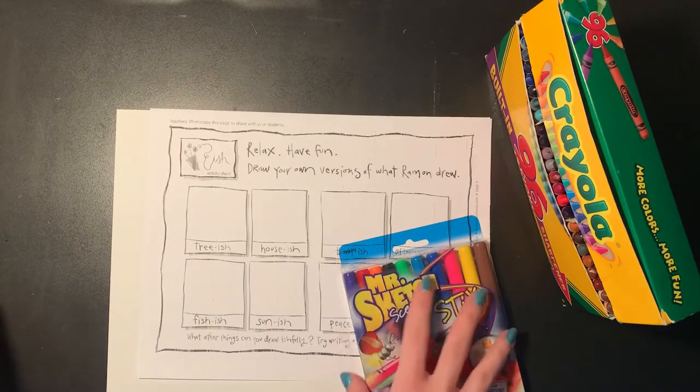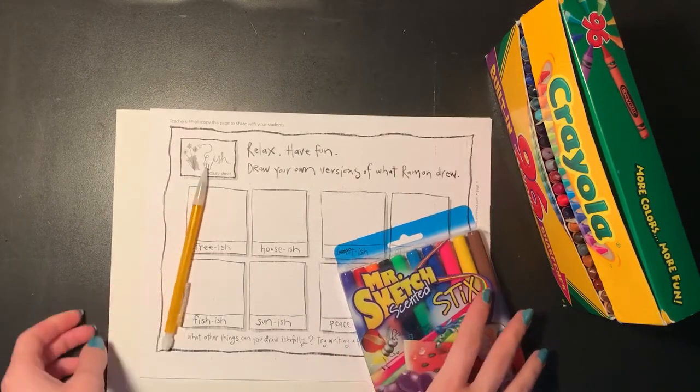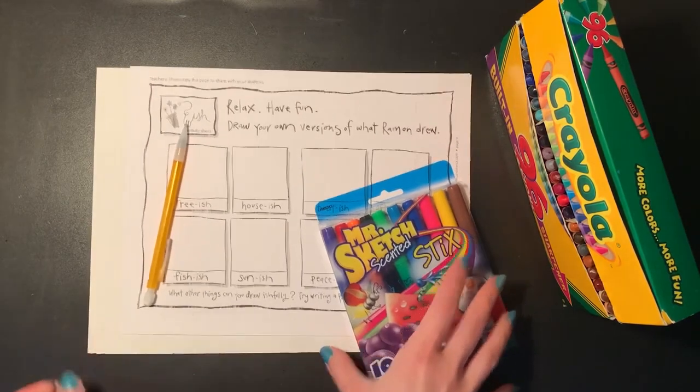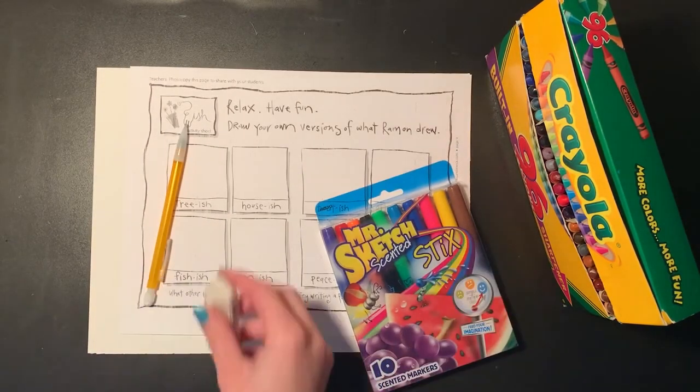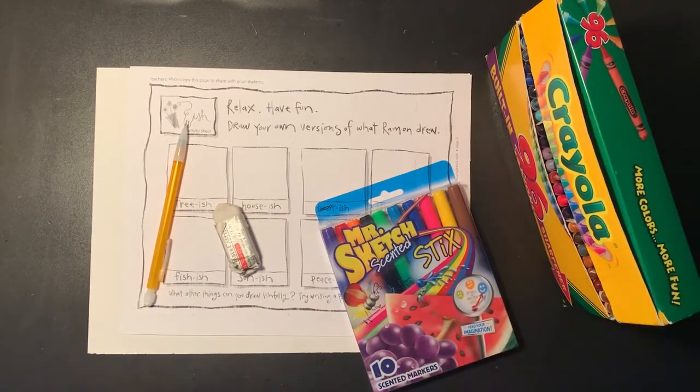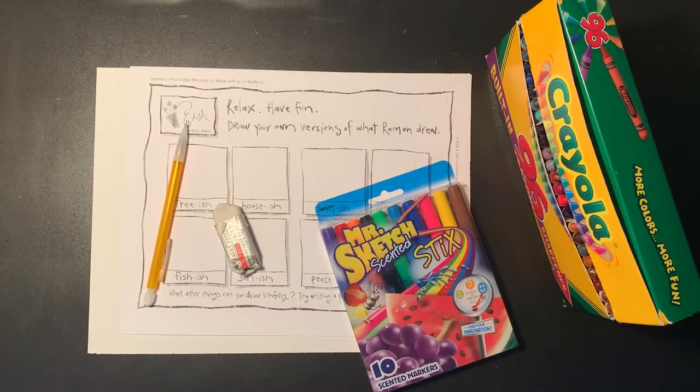Hi everyone, it's Miss Rossi. Today we are going to create a project based on the Peter H Reynolds book-ish. What you will be needing today is a pencil, an eraser, and some things to color with. I have some markers here and some crayons that I'm going to use to add color to my picture, but you can use anything else you have to add color.